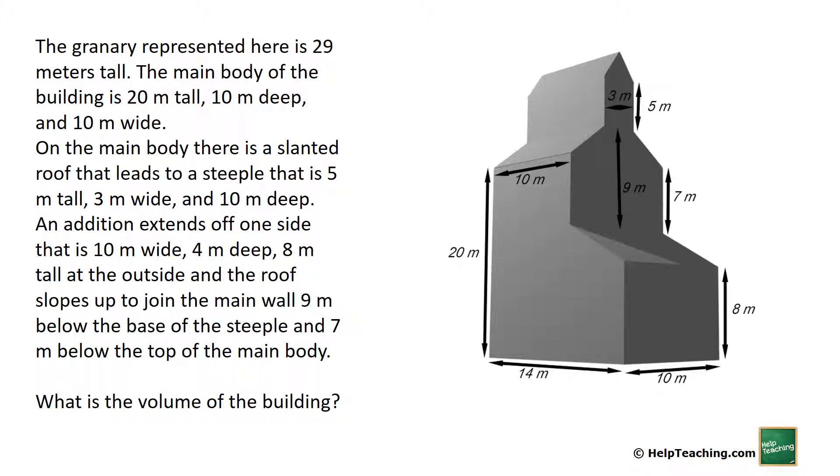An addition extends off one side that is 10 meters wide, 4 meters deep, 8 meters tall at the outside, and the roof slopes up to join the main wall 9 meters below the base of the steeple and 7 meters below the top of the main body.